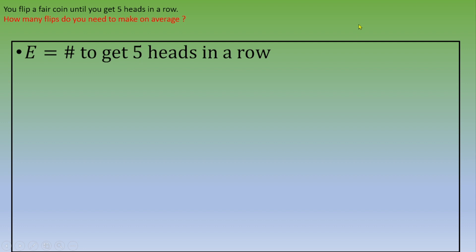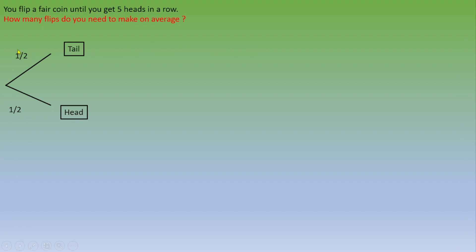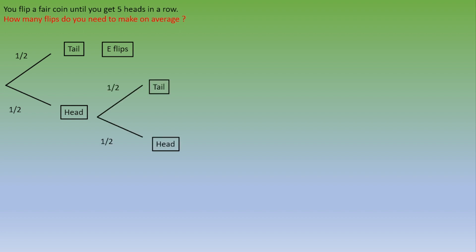Let's start by naming E the expected number of flips to get five heads in a row. Then we are going to draw a tree to see the situation. On the first flip, you have a probability of one half to get a tail and a probability of one half to get a head. If you get a tail, you need to flip the coin E more times to get five heads in a row.